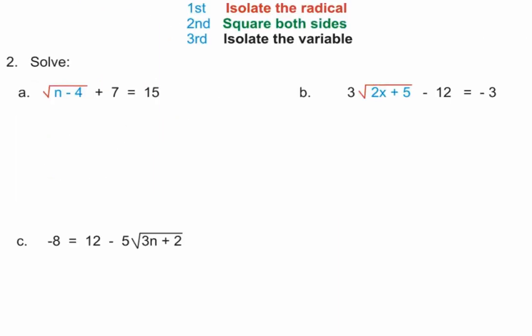So let's look at a few of them. On number two A, you see the radical, right? It's right here. We need to get it by itself. What's in its way? The seven, right? So what do we do? Add a negative seven to both sides. Now I have negative the square root of N minus four equals eight. Do we have the radical isolated? We do. The N minus four is the radicand. The radical is by itself. We are now ready to square both sides.